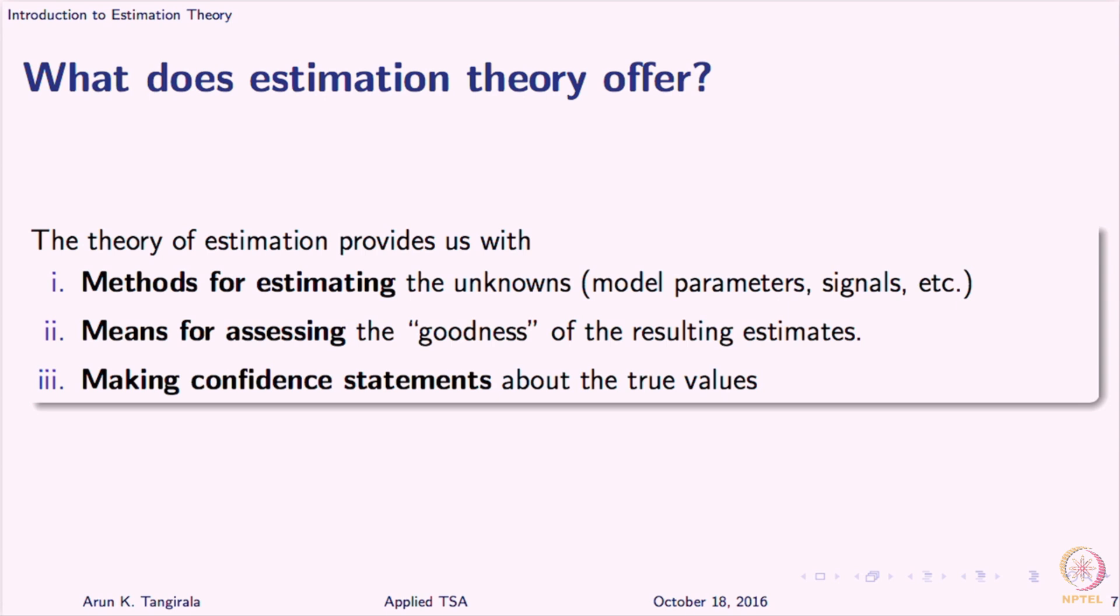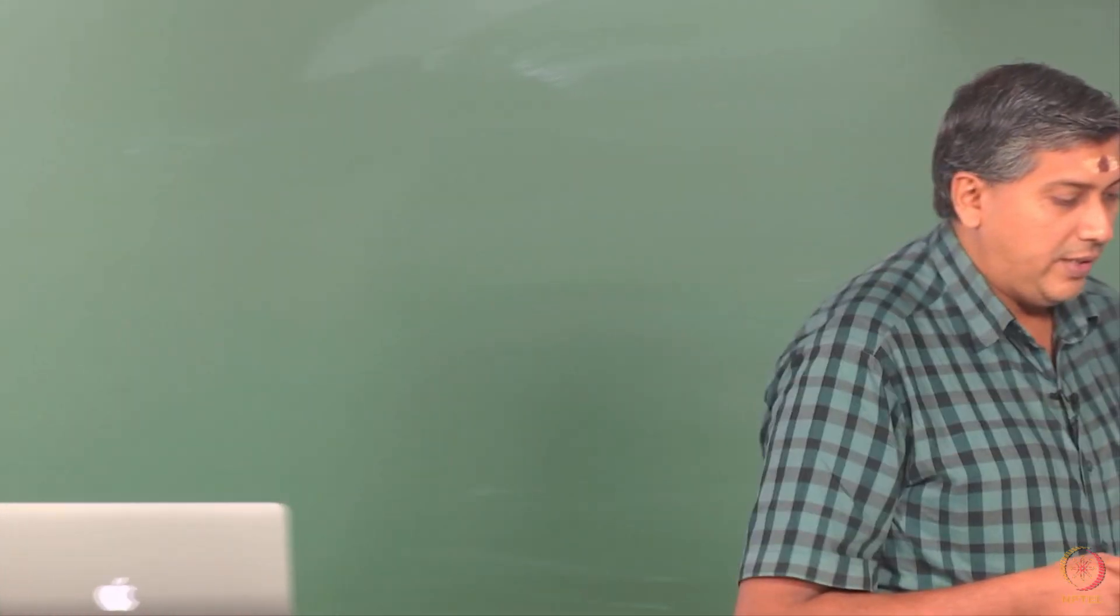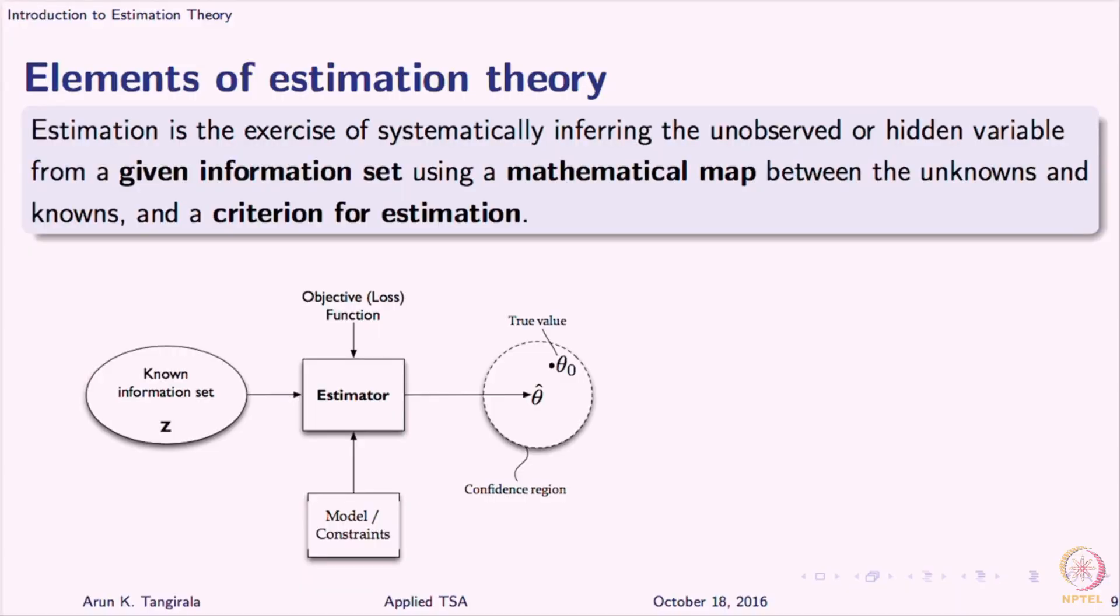So what we will do is, right now, get introduced to the basics of estimation. In a basic estimation exercise, what are the elements that participate? In any estimation theory, you will see these elements. As you see on the screen, there is a schematic. The first element in estimation is the data itself. All of us hopefully understand what is estimation. It is a method of systematically inferring the unknowns, taking into account the uncertainties in the data and also taking into account the uncertainties in any other information that you may have.